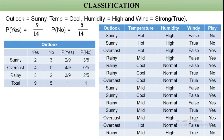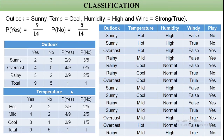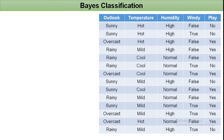Total 'Yes' are 9 and total 'No' are 5; the sum of each column's probabilities equals 1. Similarly, for temperature with three categories — hot, mild, and cool — total 'Yes' are 9 and for hot, 'Yes' are 2, so P(Temperature=Hot | Yes) = 2/9. 'No' are also 2, so P(Temperature=Hot | No) = 2/5. We calculate all temperature probabilities similarly.